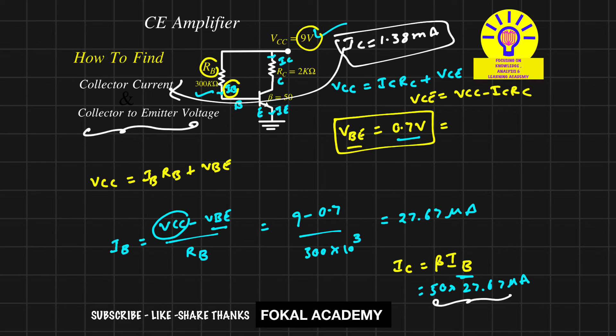VCC is given as 9 volts, IC is 1.38 milliamperes, and RC is 2 kilo-ohms. By simplifying, we get VCE = 6.24 volts. This is the collector to emitter voltage.